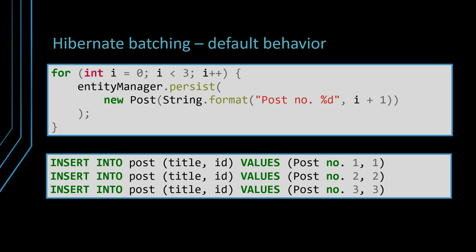When it comes to translating entity state transitions, Hibernate uses only PreparedStatements for the automatically generated insert, update, and delete DML statements. This way, the application is protected against SQL injection attacks, and the data access layer can better take advantage of JDBC batching and statement caching. With plain JDBC, batch updates require programmatic configuration because, instead of calling executeUpdate, the application developer must use the addBatch and executeBatch methods.